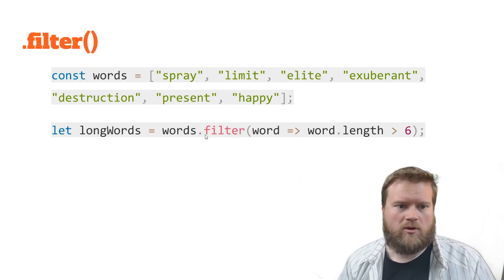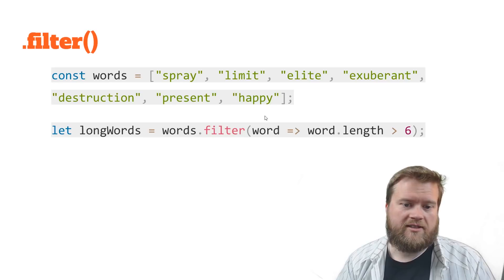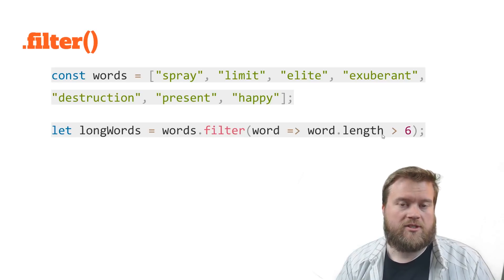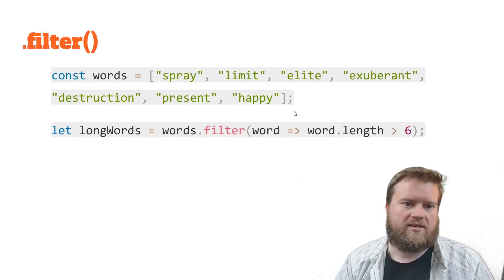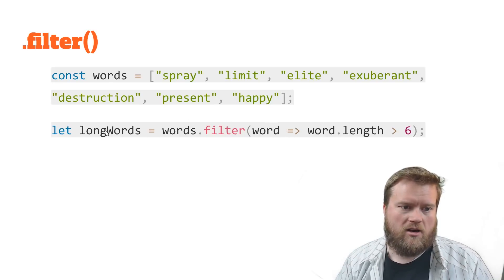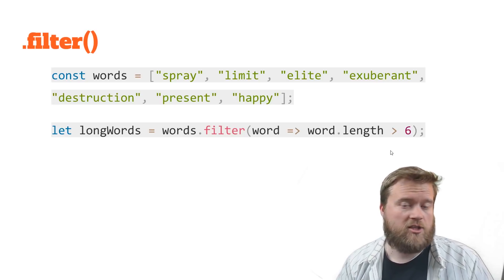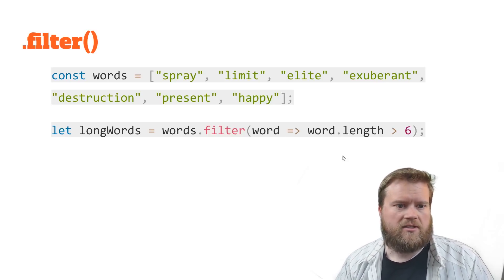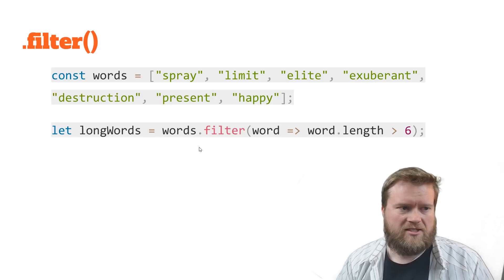If it's false, then it will filter it out. So what it does is it iterates through this array. Every word is checked. If it comes true, it is returned. If it's false, then it's taken out. So this long words would have every word that's greater than six in it. That is filter.